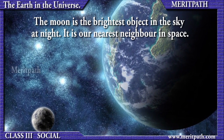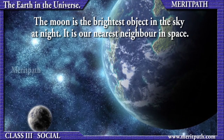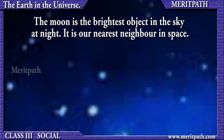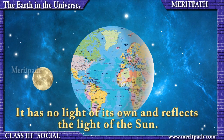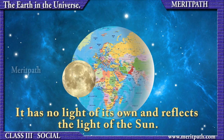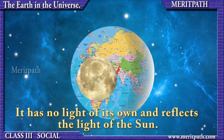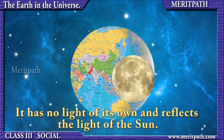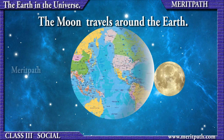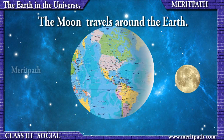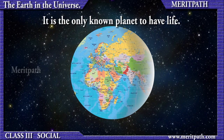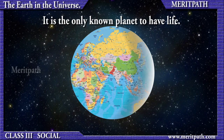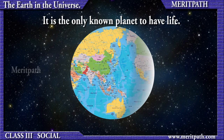Planets shine with a steady light, unlike stars. Our nearest neighbor in space is the Moon, which is the brightest object in the sky at night. Though it is the brightest object, it does not have light of its own — it reflects the light of the Sun. The Moon travels around the Earth.